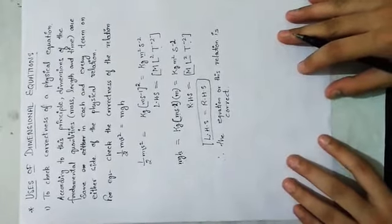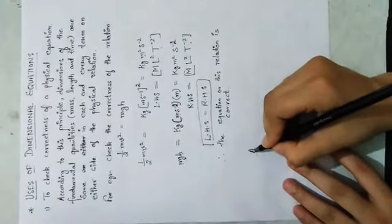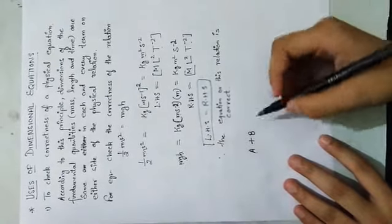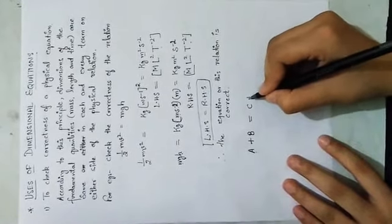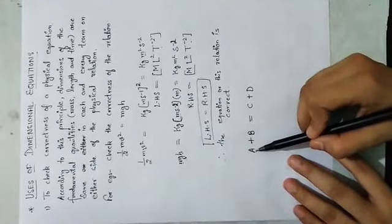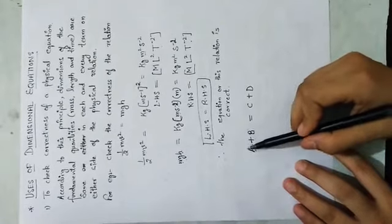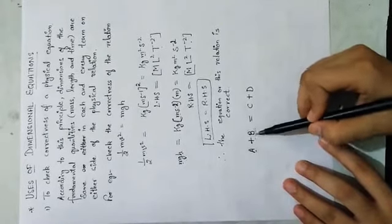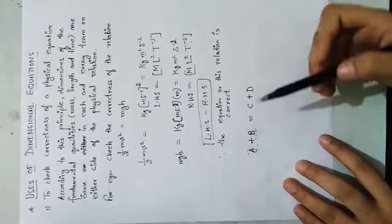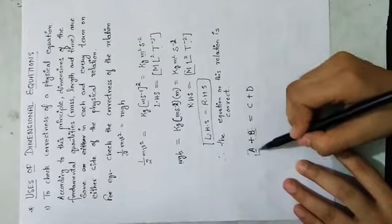LHS ke dimensions equal hain RHS ke, therefore the equation or this relation is correct. Kai baar kya hota hai ki single single terms nahi hogi — usme kaha hai na 'each and every term.' Matlab kai baar aapke paas A plus B jaise terms ho sakti hain. Yeh tab add ho sakte hain jab in dono ke dimensions same hon. Matlab do cheezein tab add hoti hain jab woh same hon — jaise velocity mein velocity add kar sakte ho.